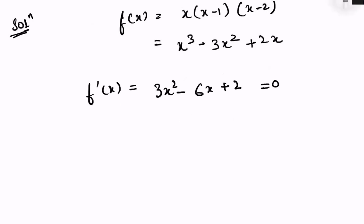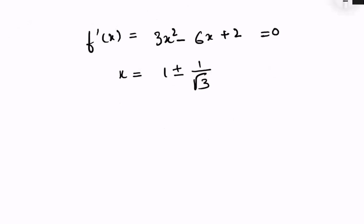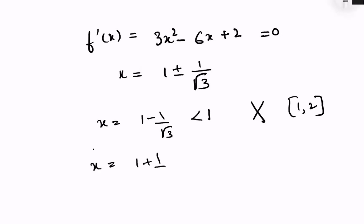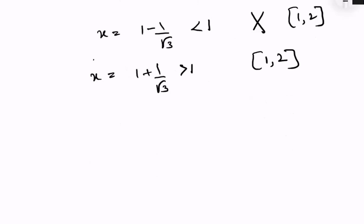When we differentiate f(x) we get 3x squared minus 6x plus 2. Now let's equate this to zero to find the critical values of x. We get x equals 1 plus or minus 1 upon root 3. We know that x equals 1 minus 1 upon root 3 is less than 1, so it does not fall in the interval 1 comma 2 and we won't use it. For x equals 1 plus 1 by root 3, it is greater than 1 and falls within the interval 1 comma 2.